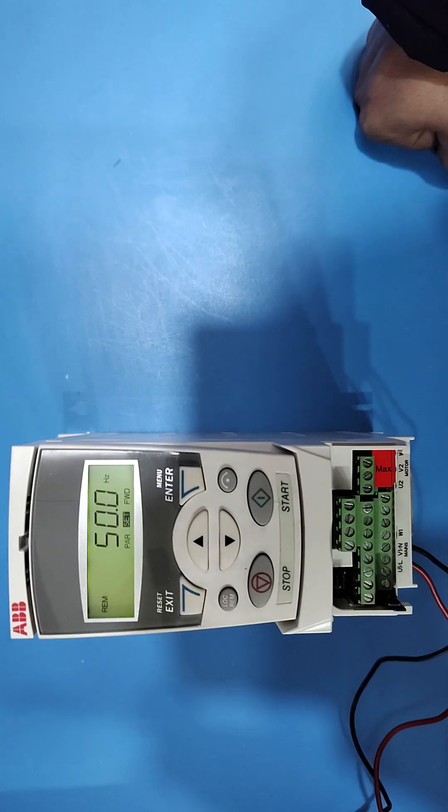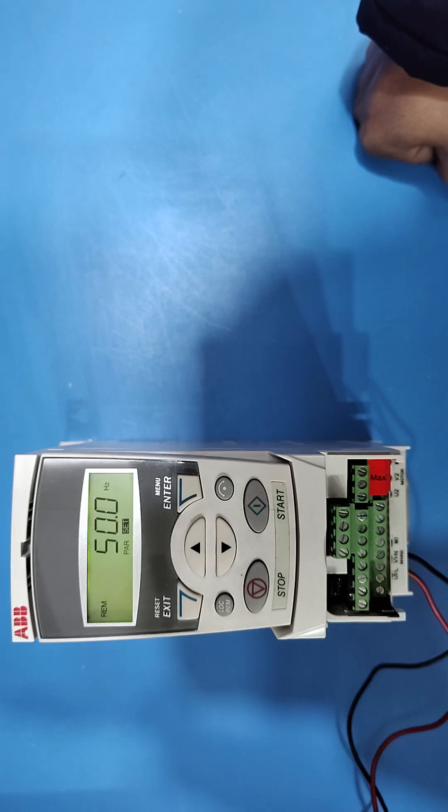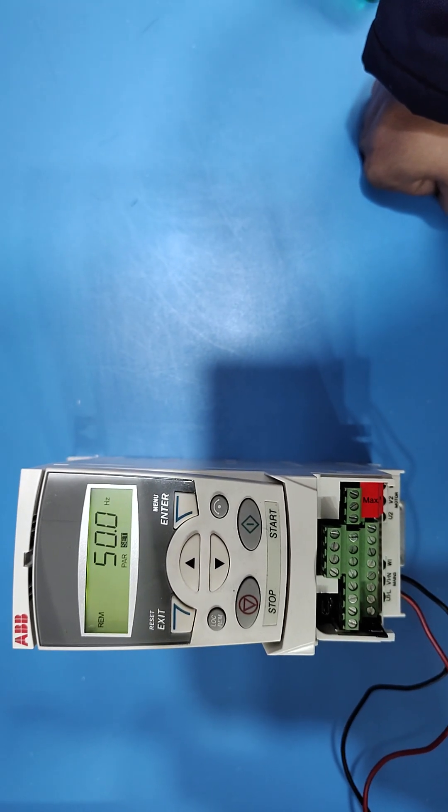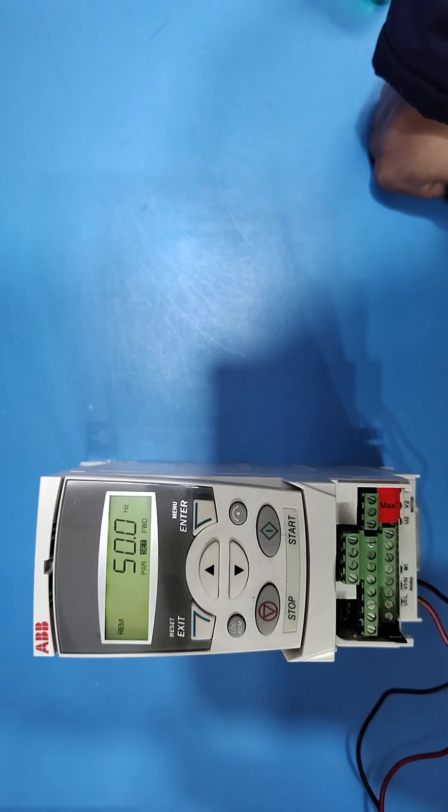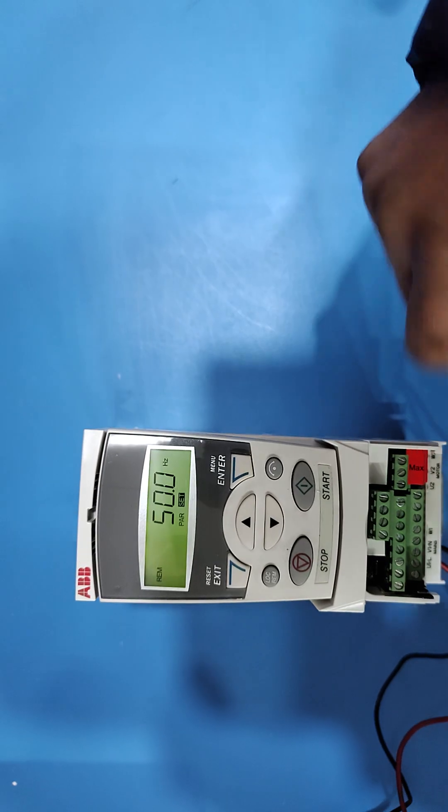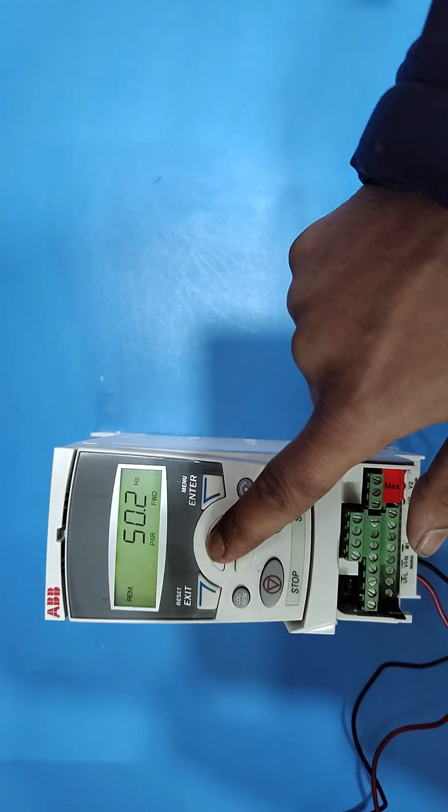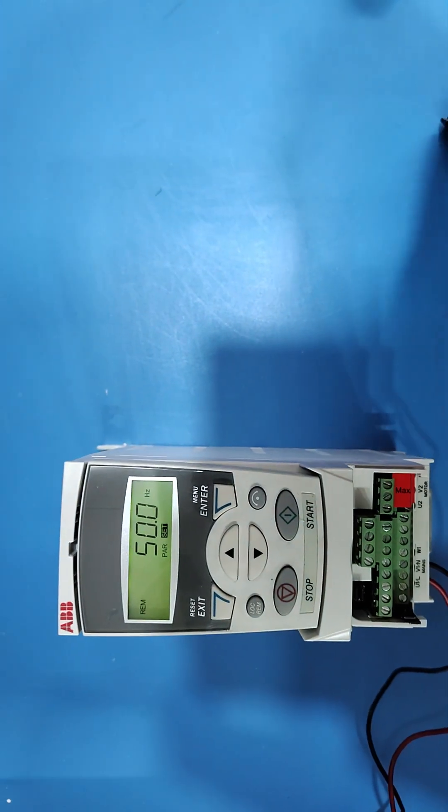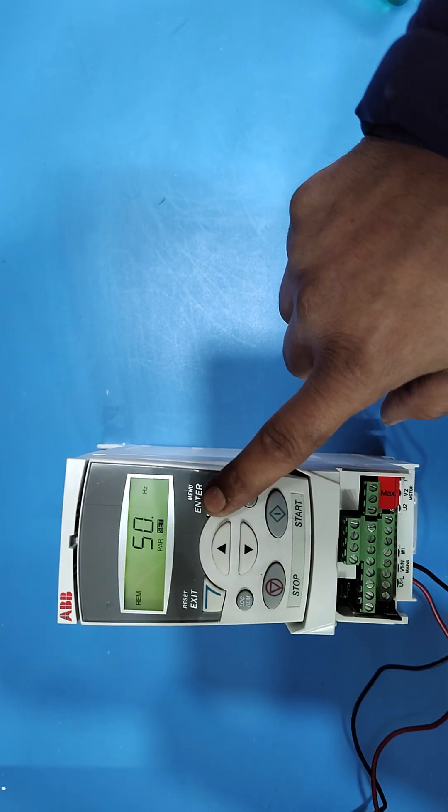Maximum frequency is the frequency limit that your drive can run up to. If you set 60 Hertz to maximum output frequency, the drive will not exceed 60 Hertz. By pressing up and down key, you can change the value. Press enter key to save.